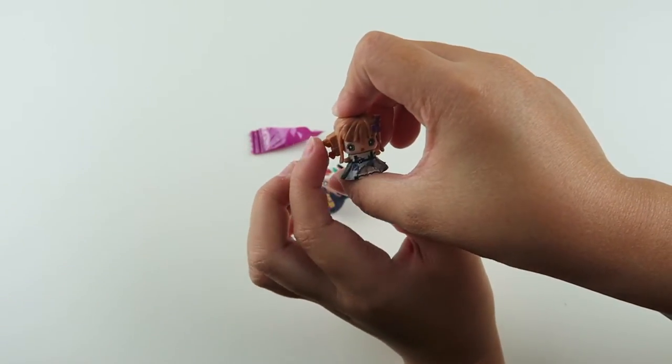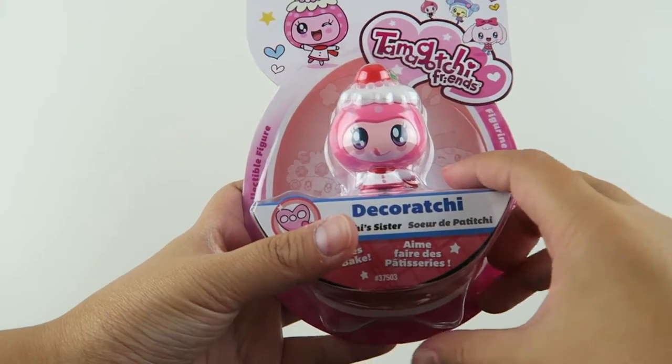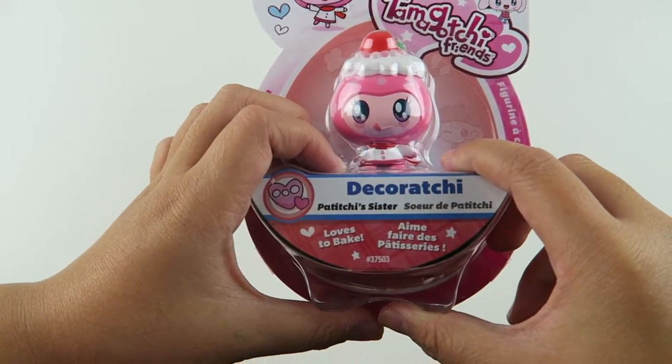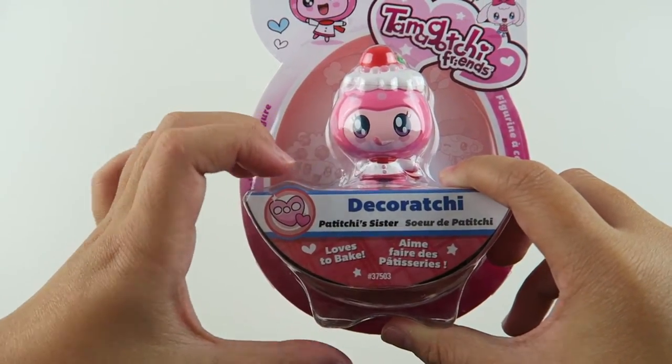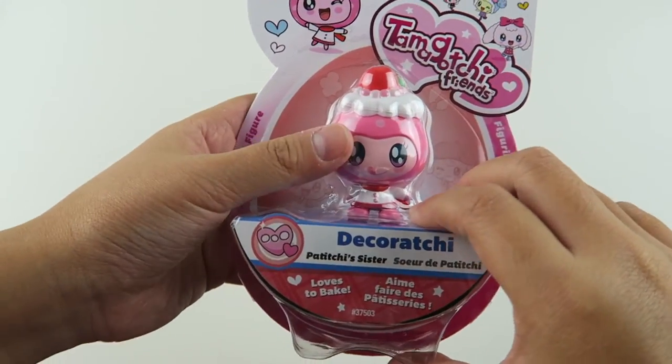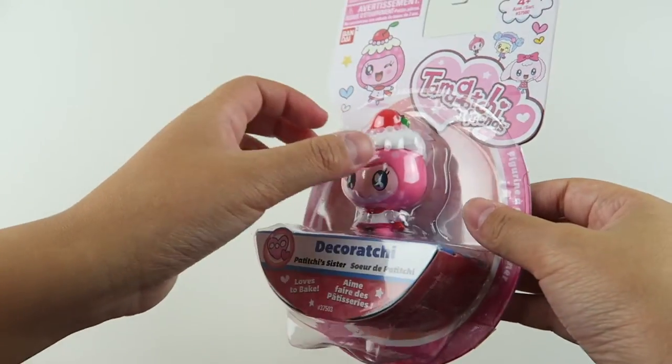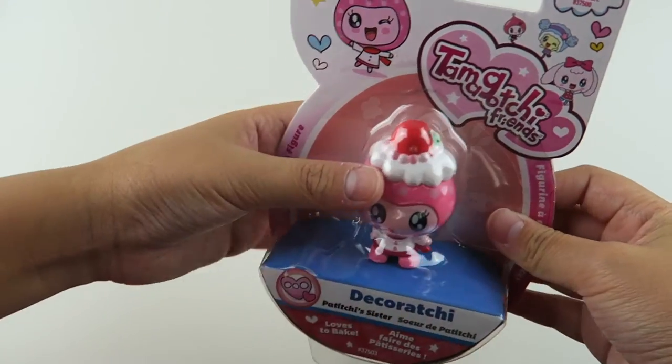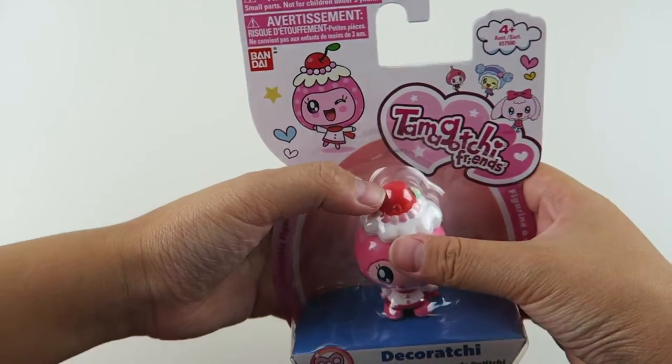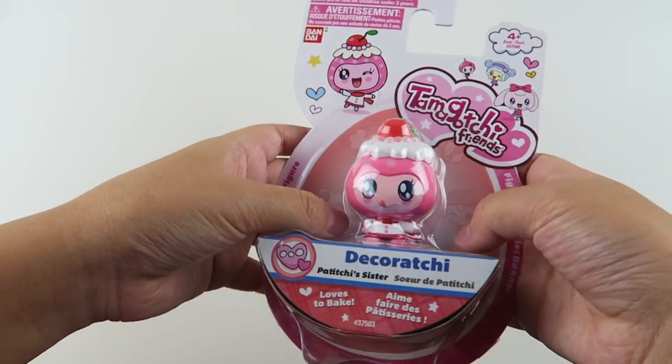So the last item we got is a Tamagotchi friend and her name is Dekorachi and she loves to bake. It's super super cute. It's one of those kawaii figures. This is super super cute and it has like whipped cream on the top and like a little cherry. That's super cute.